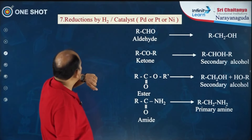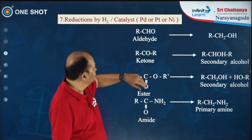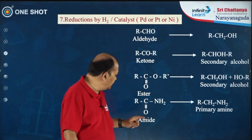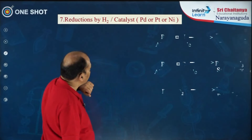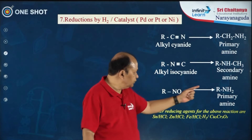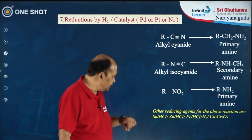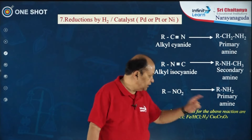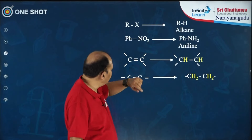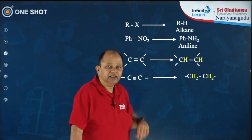Another reducing agent: hydrogenation using catalysts like palladium, platinum, or nickel. Aldehyde converts to primary alcohol, ketone to secondary alcohol, ester to secondary alcohol, and amide to primary amine. Further: alkyl cyanide gives primary amine, alkyl isocyanide gives secondary amine, and nitroalkane gives primary amine — this reaction can also be accomplished using Sn/HCl, Zn/HCl, Fe/HCl, or H2/copper chromate. Alkyl halide gives alkane, and nitrobenzene gives aniline. Double and triple bonds are also hydrogenated to give alkanes.